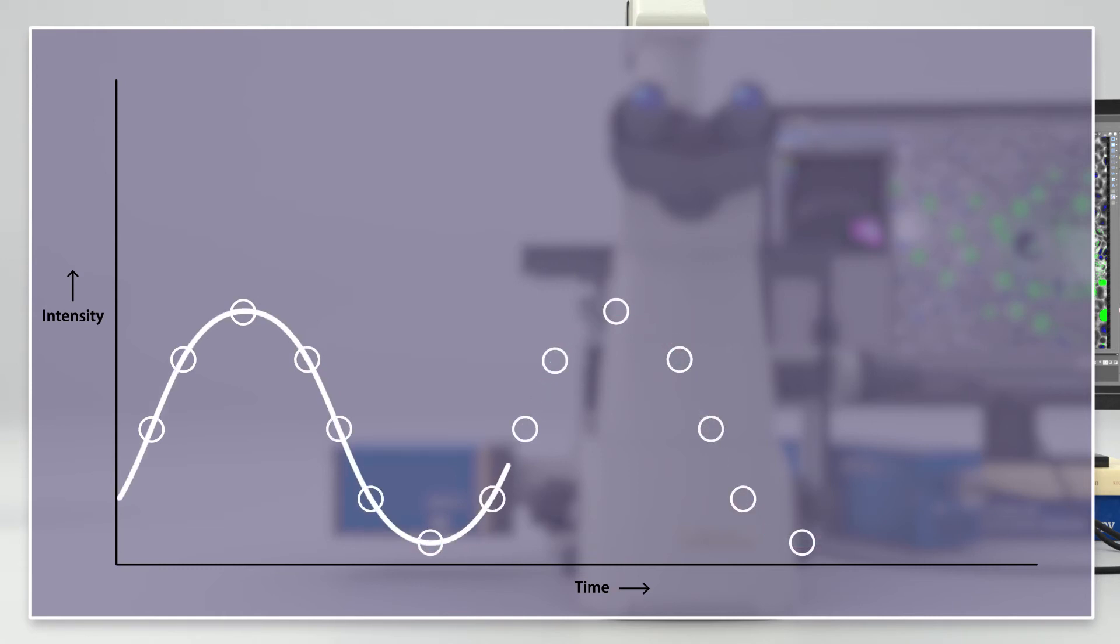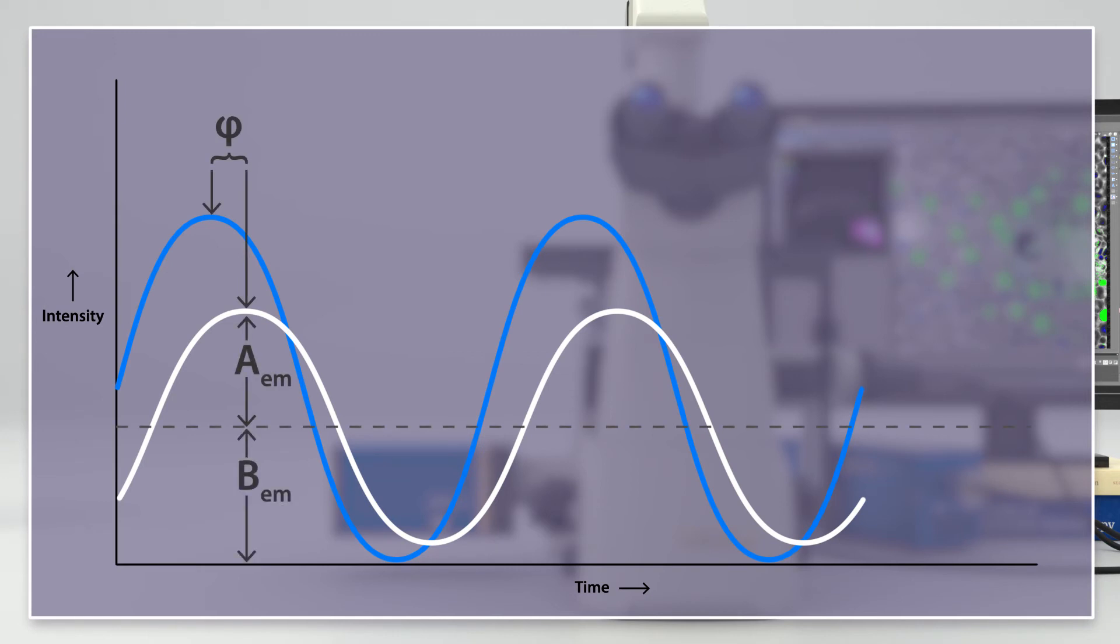Finally, a sine curve is fitted into the measured values in the images I1 to I4 for each pixel. This sine curve provides the phase angle phi, the amplitude A-emission, and the constant component B-emission, which are used to determine the corresponding fluorescence lifetime values.